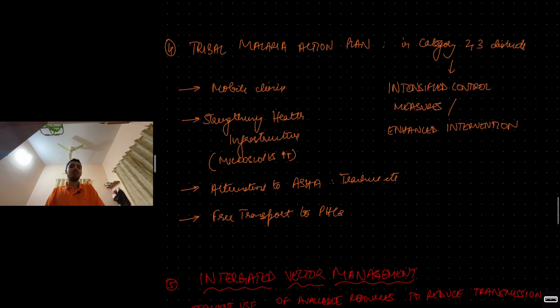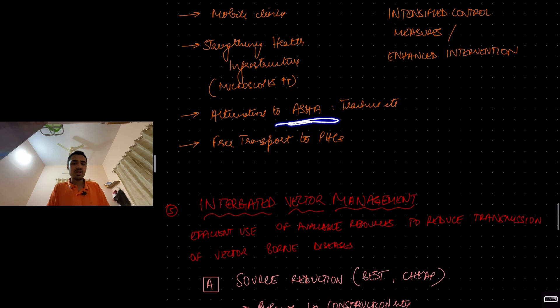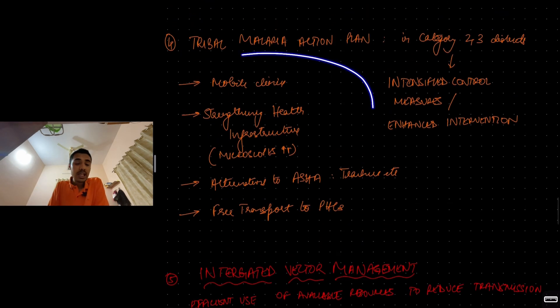Next came tribal malaria action plan. This is in category 2, 3 districts. Basically, the endemic regions which require intensified control, enhanced interventions, scaled-up intervention. Here, you will set up mobile clinics to go to these rural areas, endemic areas for active case detection. You will strengthen the health infrastructure so that every PHC, CHC will have microscopes, you can do peripheral blood smear examination. You will have alternatives to ASHA workers. Here, in these rural areas, ASHA workers cannot reach every population, tribal population, this unreached population. So teachers, forest workers, these guys are recruited and trained. Free transport to come to the PHC and get treated. These are all certain intensified control measures under Tribal Malaria Action Plan.